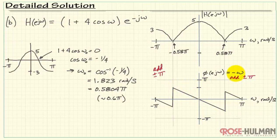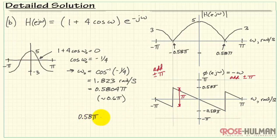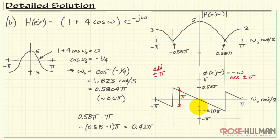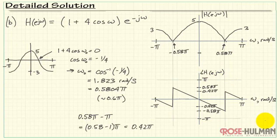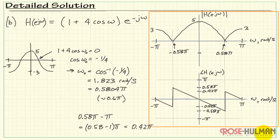Based on the phase being minus omega, the relevant value is approximately 0.58 pi, and symmetrically minus 0.58 pi. The jump in phase has a distance of pi, so we go from 0.58 pi down to 0.42 pi, with the lower value at minus 0.42 pi. At this point, we've constructed both the magnitude and the phase of the frequency response.